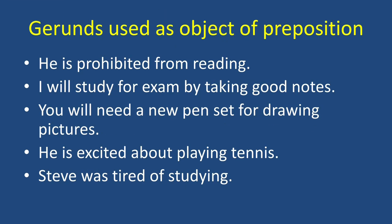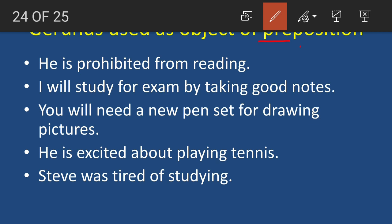Now let's see gerunds used as the object of a preposition. A preposition is a word placed before a noun or pronoun to show its relation with other words in the sentence — 'pre' means before, 'position' means placed. Example: 'He is prohibited from reading.' The -ing form is 'reading,' and before it 'from' is the preposition. So 'reading' is the object of the preposition 'from.'